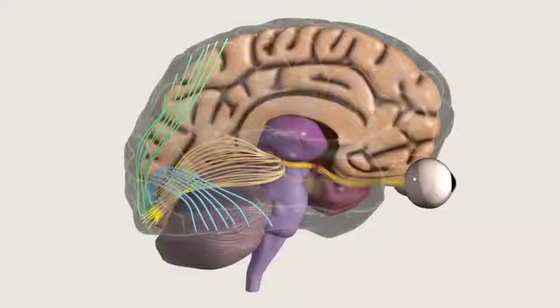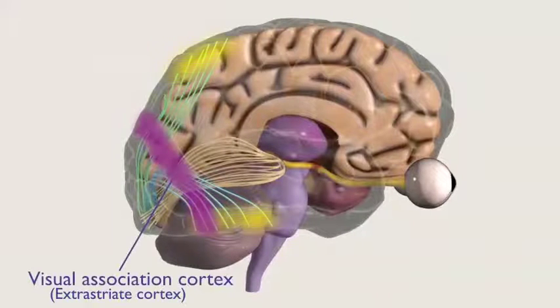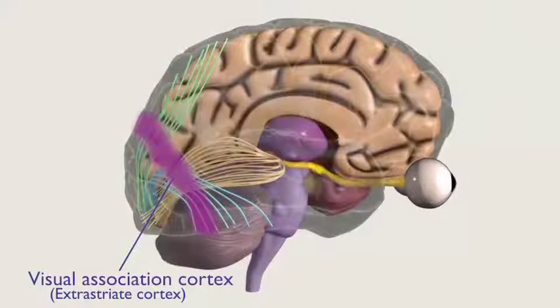That combination takes place in the visual association cortex. The visual association cortex, also known as the extra-striate cortex in the occipital lobe, is directly adjacent to the primary visual cortex. Here, Laura begins the process of identification and recognition of visual objects.